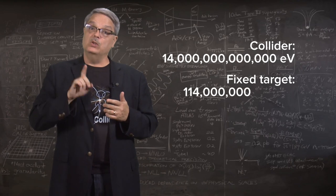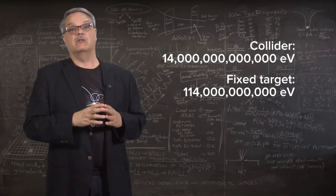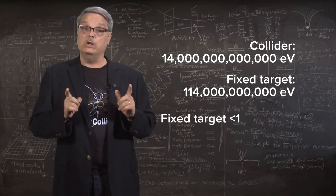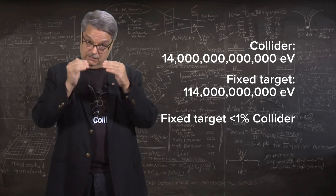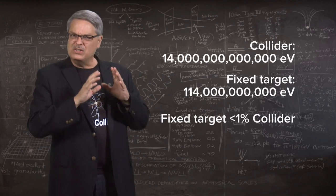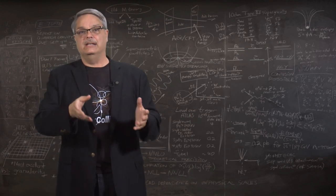But if you took a proton from one of those beams and collided it with a stationary target, the useful energy wouldn't be 7 trillion electron volts. It would only be 0.114 trillion electron volts, or less than 1% what you get when the two beams collided head-on. With such a big difference, it's clear that colliding is the way to go.